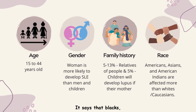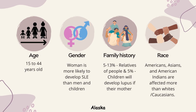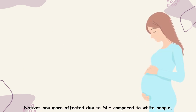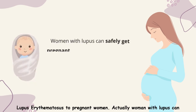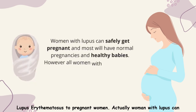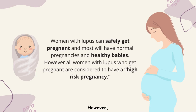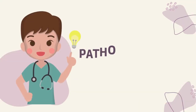The final risk factor which causes the development of SLE is race. According to research, Blacks, African Americans, Hispanics or Latinos, Asians, and American Indians or Alaska Natives are more affected by SLE compared to white people. Women with lupus can safely get pregnant and most have normal pregnancies and healthy babies. However, all women with lupus who get pregnant are considered to have high-risk pregnancies.